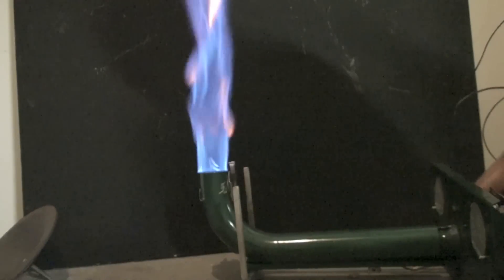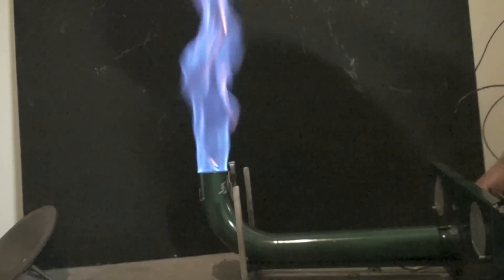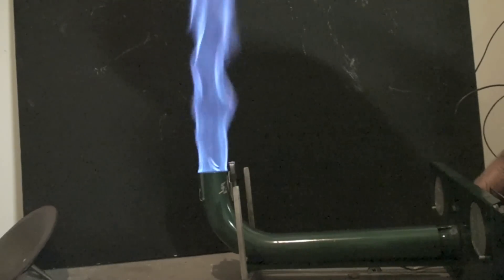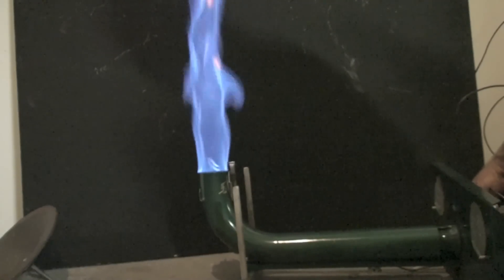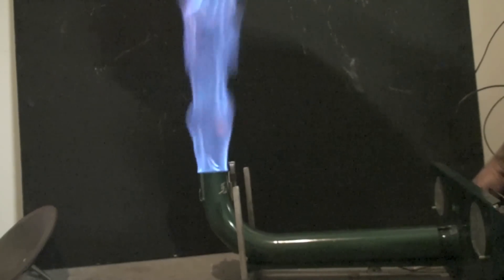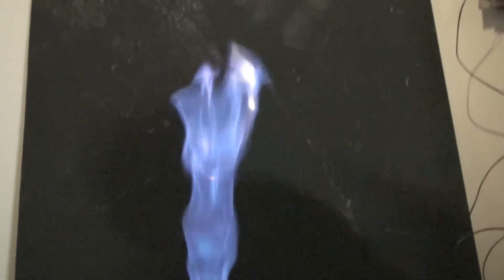So we'll go back down to a bit of a yellow flame. The little sparklies don't mean anything, they're just bits of dirt going through. Now you can see the yellow tips, so you can see the top of this again.